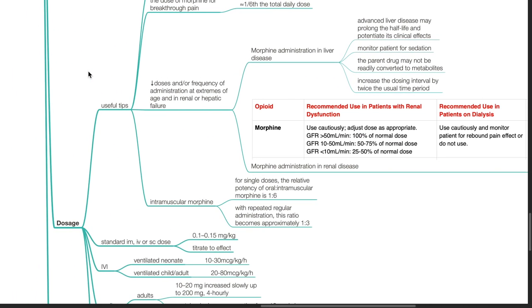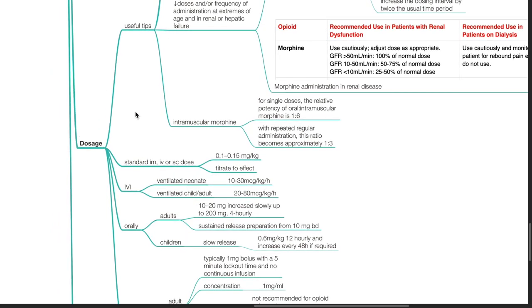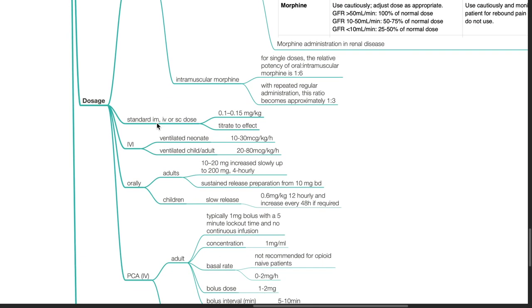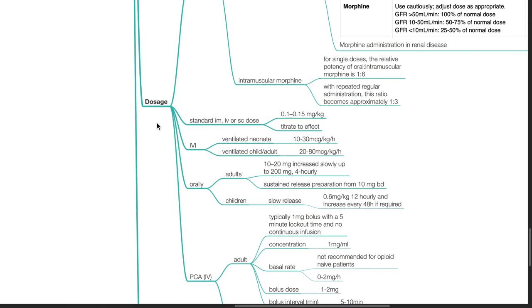Intramuscular morphine. For single doses, the relative potency of oral versus intramuscular morphine is 1 to 6. With repeated regular administration, this ratio becomes approximately 1 to 3. Standard IM, IV or subcutaneous dose is 0.1 to 0.15 mg per kg, titrate to effect.